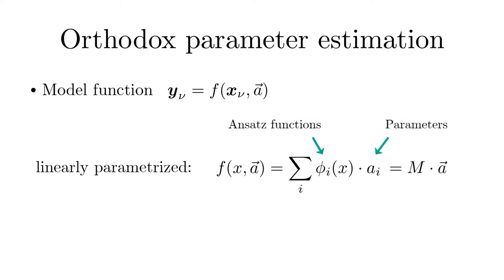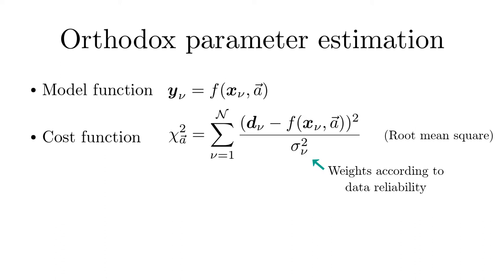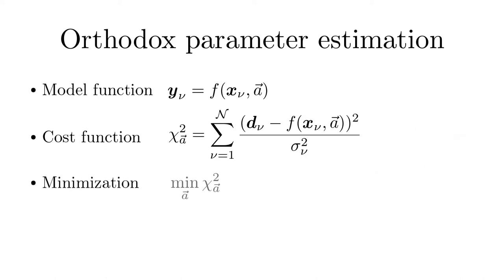Based on the model function a cost function is introduced that quantifies deviations between model function and data. A very common cost function is the root mean square function. Sometimes the individual contributions get a weight according to the reliability of the measured data. Outliers thus have a very strong impact on the cost function.